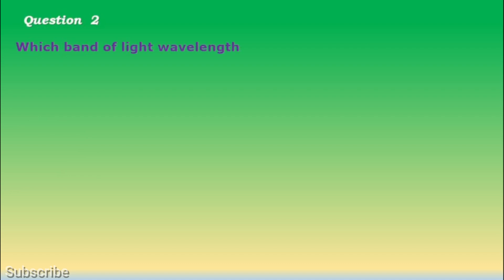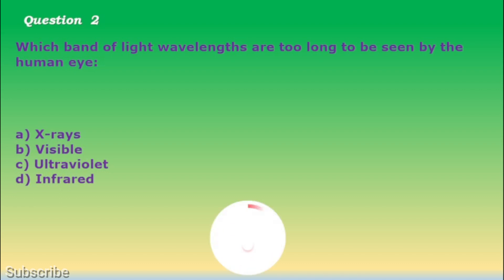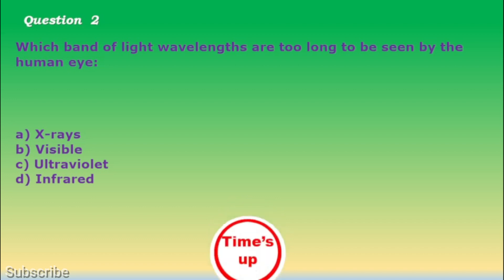Question number 2. Which band of light wavelengths are too long to be seen by the human eye? a. X-rays, b. Visible, c. Ultraviolet, d. Infrared. The correct answer is letter d. Infrared.